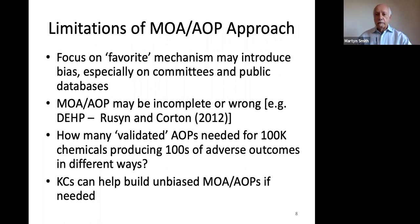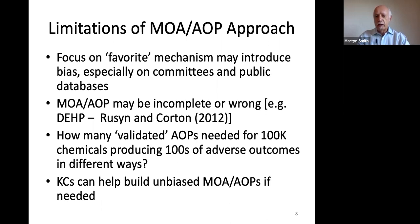There's also a tendency of people to focus on favorite mechanisms, which may introduce bias, especially in committees. For example, I might think benzene works in a particular fashion while another scientist thinks it works differently on the bone marrow — and depending on who's on the committee, that becomes the mechanism we go with. There are examples where the mode of action may be incomplete or wrong, and many AOPs appear to be quite incomplete. And how many validated AOPs would you actually need for a hundred thousand chemicals producing hundreds of adverse outcomes?